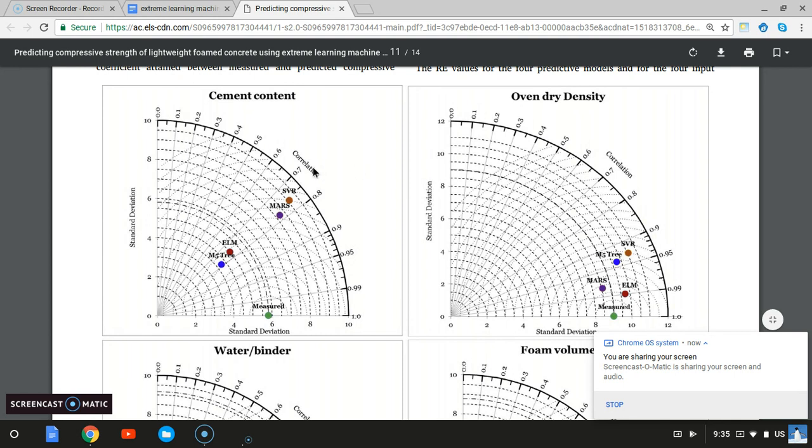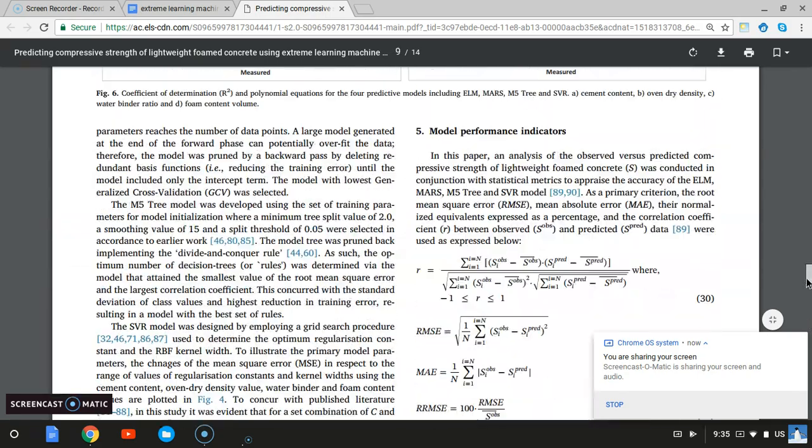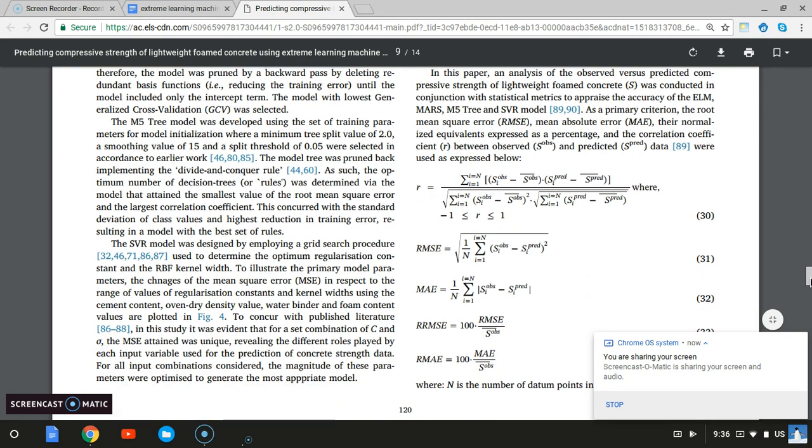This correlation goes by this formula—it's a real long formula, but it goes from negative 1 to 1. It's somewhat similar to R squared. That's the coefficient of correlation, and it's between the observed and measured.